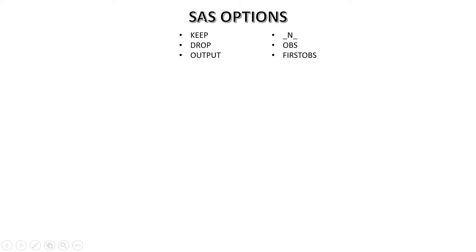Today we're going to see some most frequently used SAS options. There are six most frequently used SAS options while doing data manipulation. There are many modes but these six are most frequently used, and they are mainly used with data steps, so we also call them data options.